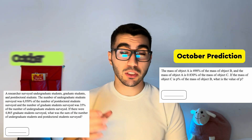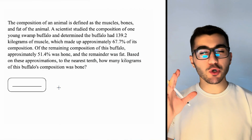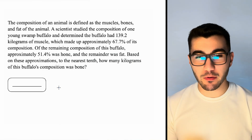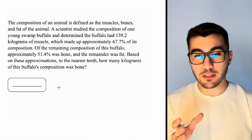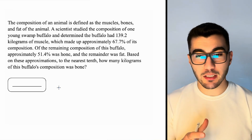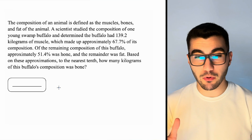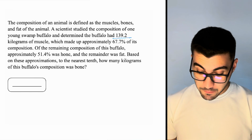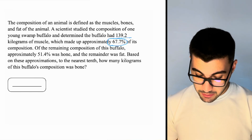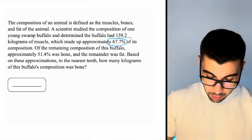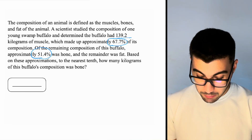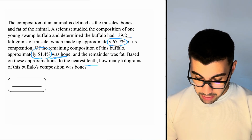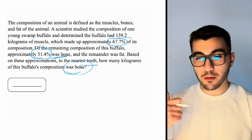The next predicted question appeared in two world-problem format versions on the October SAT. Let's go with the buffalo composition question. The composition of an animal is defined as its muscles, bones, and fat. A scientist determined a young bison buffalo had 139.2 kilograms of muscle, which is approximately 67.7% of its composition. Of the remaining composition, approximately 51.4% was bone. We need to find how many kilograms of the buffalo's composition was bone.